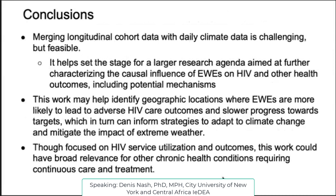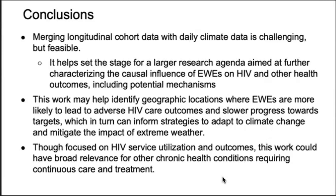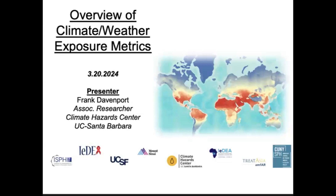What we've taken away so far is that merging longitudinal cohort data with daily climate data is challenging but feasible. It really does help set the stage for our larger research agenda. The work ultimately can help identify geographic locations and populations where extreme weather events are more likely to lead to bad outcomes and slow progress towards our efforts to end HIV as a public health threat. While we're focused on HIV service utilization and outcomes, this work has broad relevance for other chronic health conditions requiring continuous access to care and treatment.